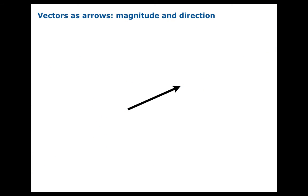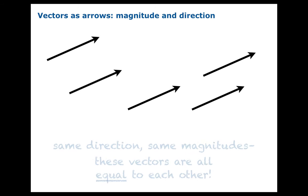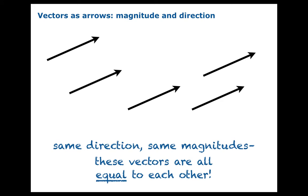Now if you have the same direction and the same magnitude as another vector, then we're going to declare that those two vectors are equal. Here are five vectors — they all have the same magnitude, same direction — they're all equal to each other. And this leads to an important point: the actual position of a vector in the plane doesn't matter.